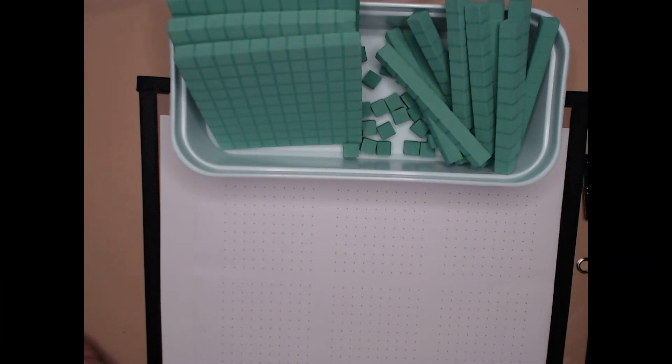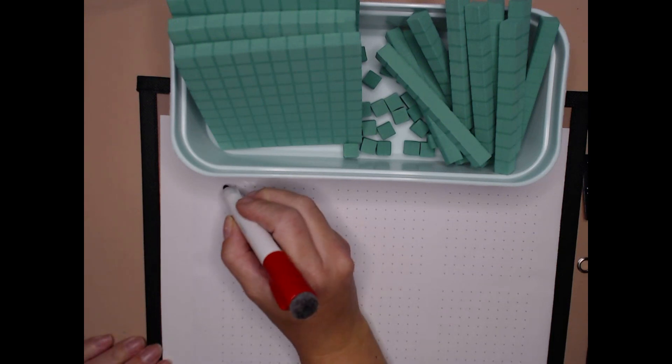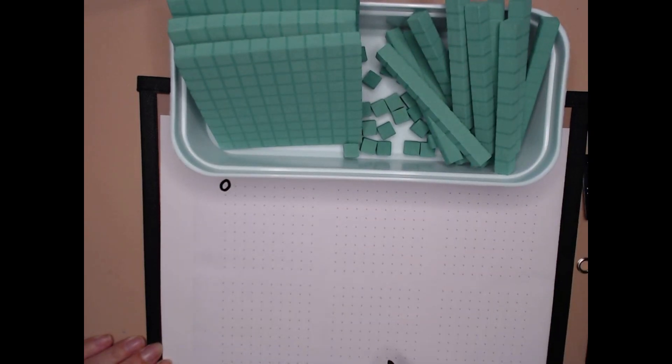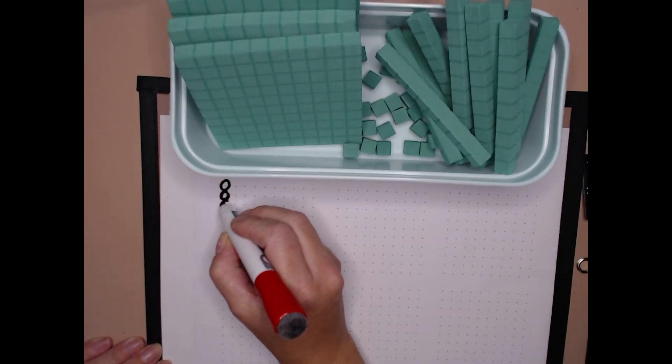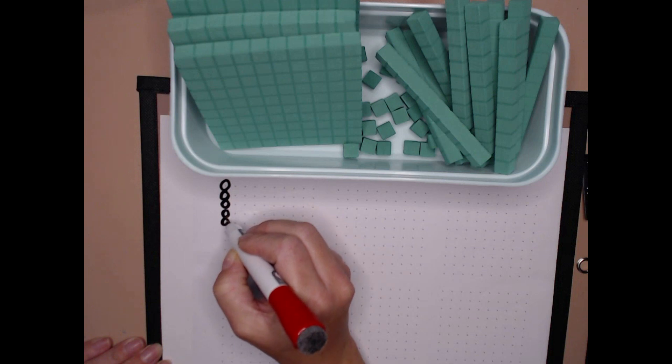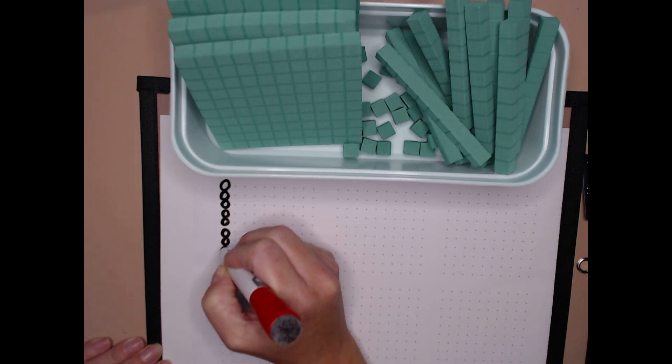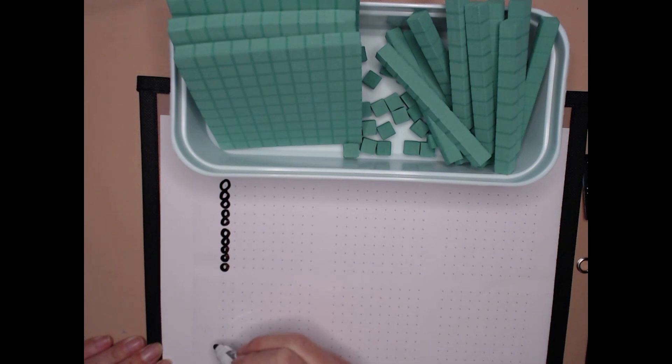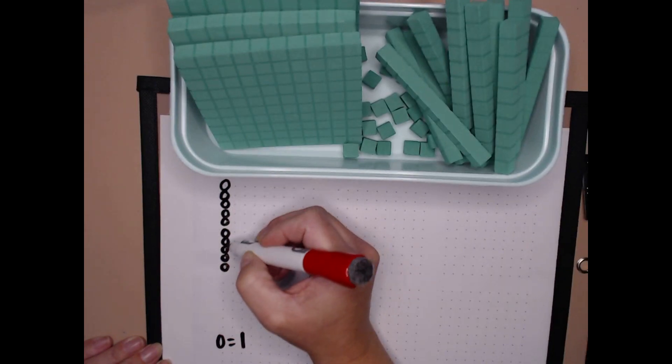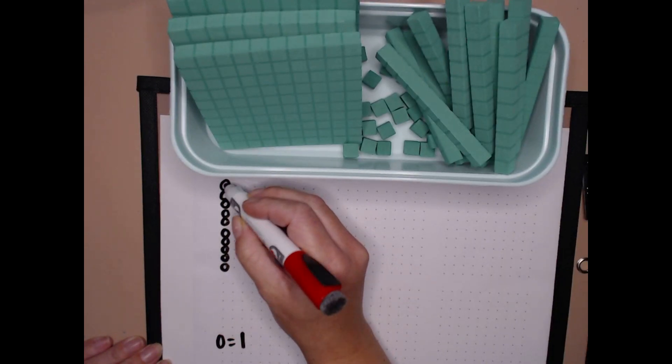Let's review our place value drawings. Remember that this equals 1. 1 circle is 1. 2, 3, 4, 5. Pause. We always give a break. 6, 7, 8, 9, 10. And remember that a circle equals 1. It's a 1 circle. But when I get 10 of them then I'm going to make a 10 stick.